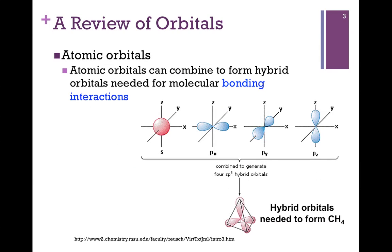When we form a molecule, those atomic orbitals overlap, and we form hybrid orbitals. Illustrated at the bottom of your screen are the hybrid orbitals needed to form the simple compound methane. There are 4 CH bonds, and so we have 4 hybrid orbitals. Notice they're all the same — otherwise, it would suggest that one CH bond is different from another. But they are all identical. We have 4 bonds, and so our shape is tetrahedral.